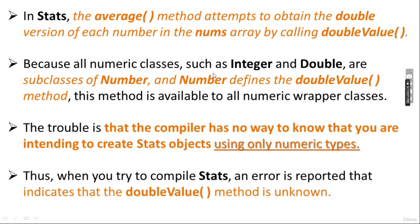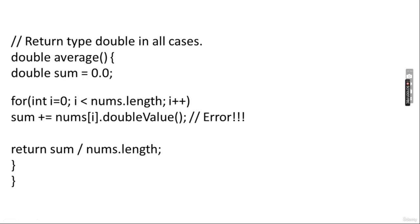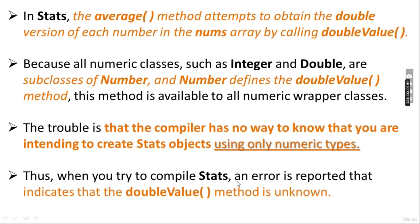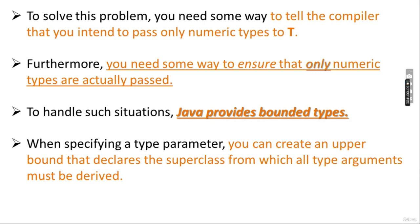The average method attempts to obtain the double version of each number by calling doubleValue(). All numeric classes such as Integer and Double are subclasses of Number, and Number defines doubleValue(), so it is available to all numeric wrapper classes. However, the compiler has no way of knowing you intend to create Stats objects using only numeric types. When you compile, an error is reported that the doubleValue() method is unknown.